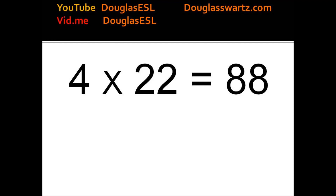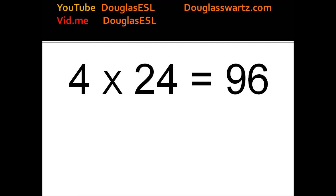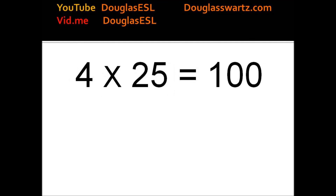4 times 22 equals 88. 4 times 23 equals 92. 4 times 24 equals 96. 4 times 25 equals 100.